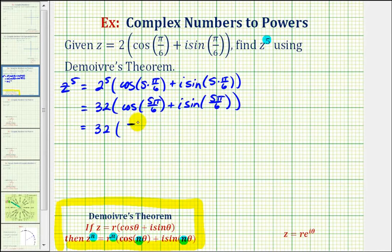So, we have negative square root three divided by two here, plus i times one-half, or one-half i. Now, we'll distribute. Thirty-two is divisible by two. So, this will simplify to negative sixteen square root three plus sixteen i.